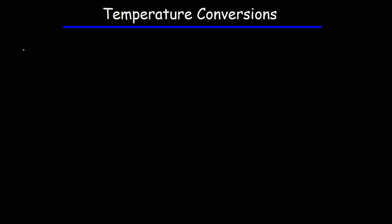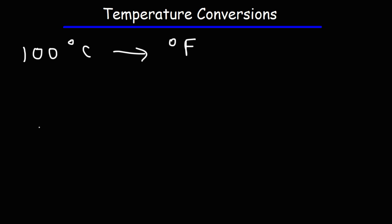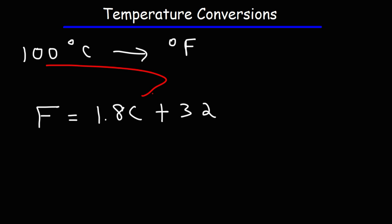Let's say we have a temperature of 100 degrees Celsius. How can we convert that temperature into Fahrenheit? If you want to convert Celsius to Fahrenheit, here's the formula: the Fahrenheit temperature F is equal to 1.8 times the Celsius temperature plus 32. All you need to do is plug in the Celsius temperature into the equation and you'll get the answer.